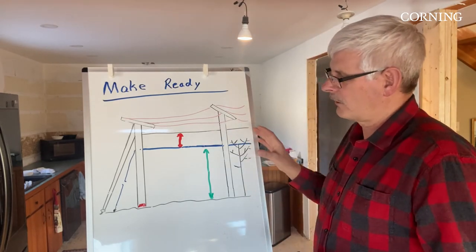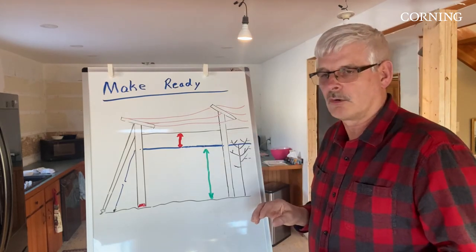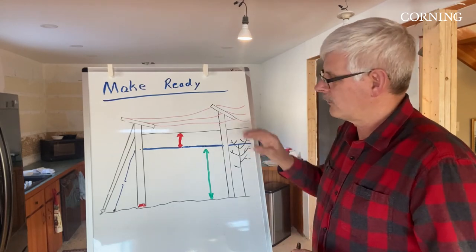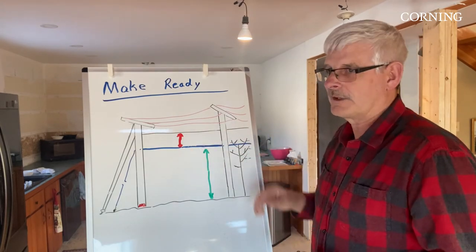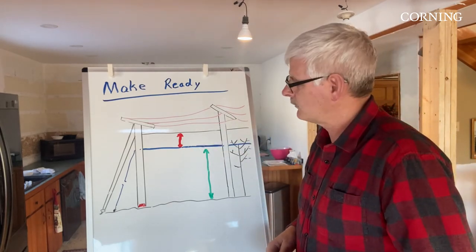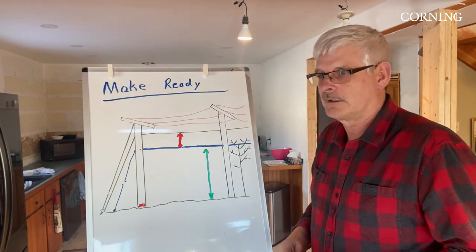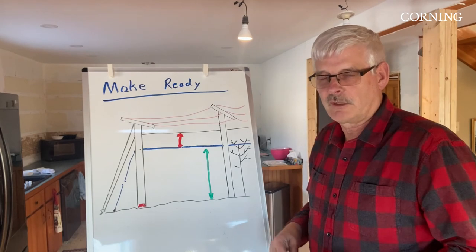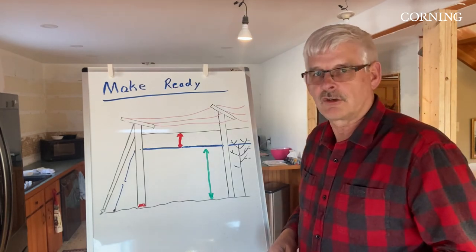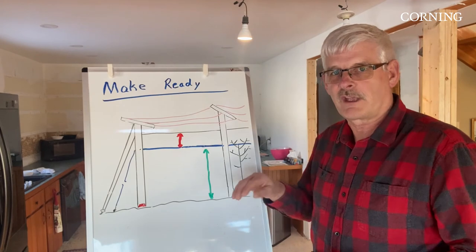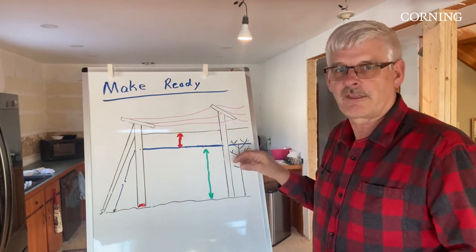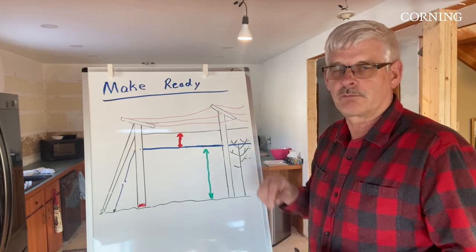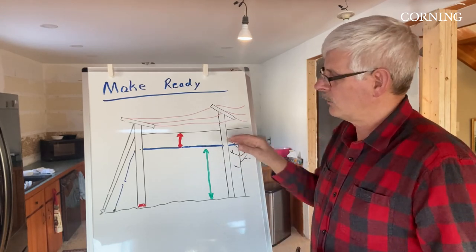So overall, those are the things that typically a pole owner will look at when you submit an application to attach your fiber cable to their pole. Typically what happens, they'll do an assessment, figure out what the fix is, and they'll send you back a response to your request to attach the cable and say, by the way, these are the things that need to be addressed before we can give you permission or a permit to attach your cable.